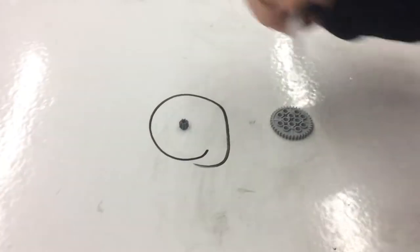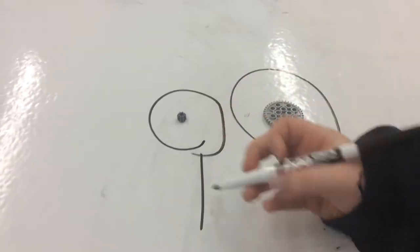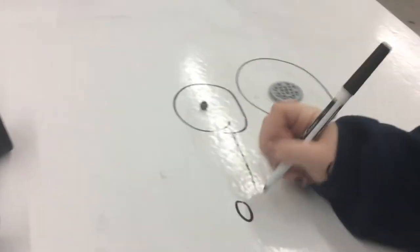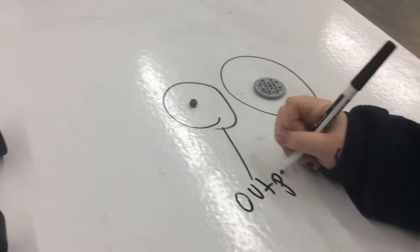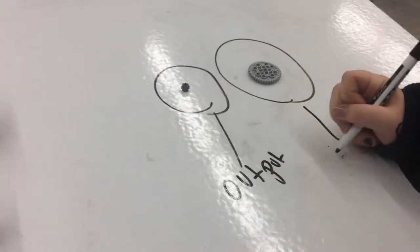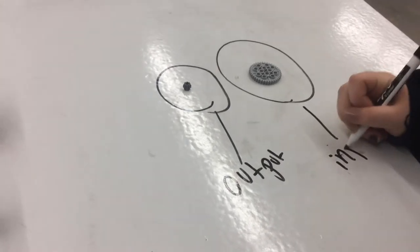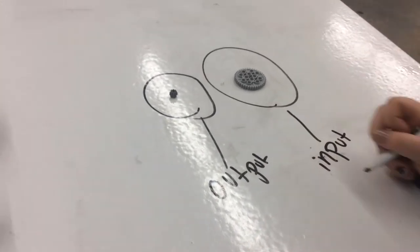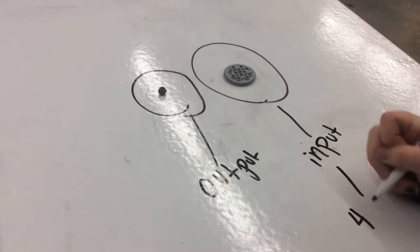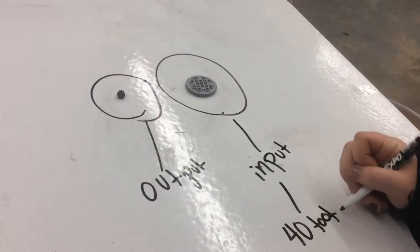These are our two gears. I circled them to indicate this is what we're working with. This one is the output gear and the other one over here is the input gear. This one is a 40-tooth gear and this one over here is an 8-tooth gear.